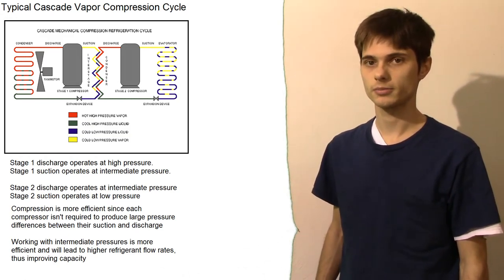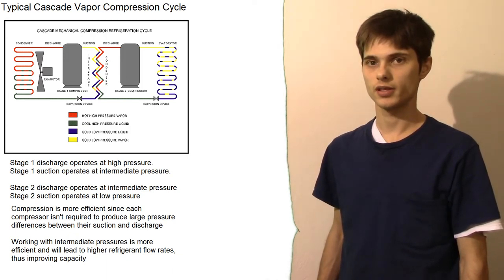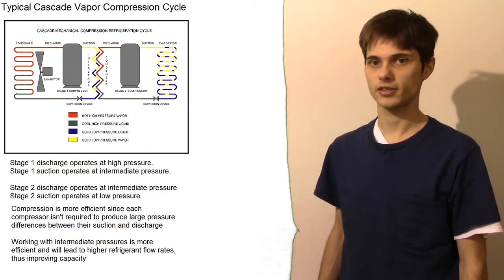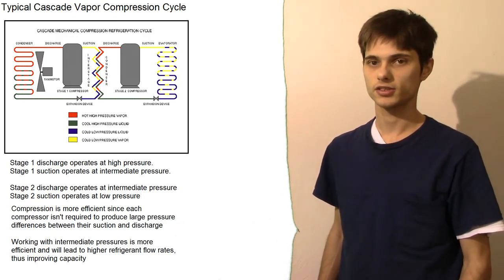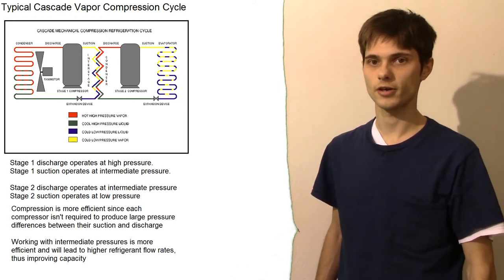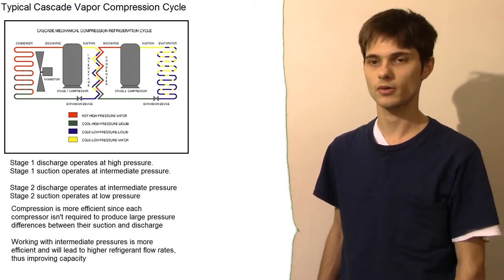Now again, on the low temperature cycle, the discharge of that will be the condenser of the low temperature cycle and that will also be in the heat exchanger. And finally, the suction side, the low side of the low temperature cycle, will be the evaporator, ultimately where heat's coming from. That will do our cooling.